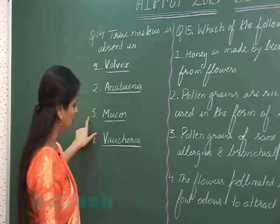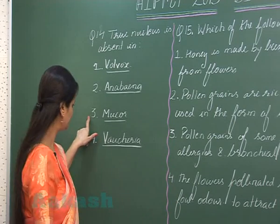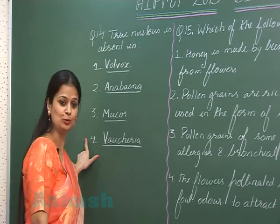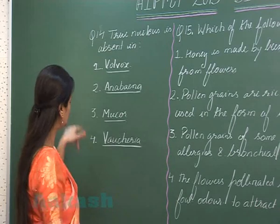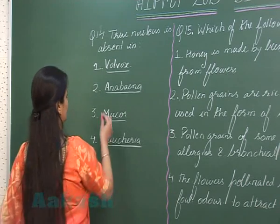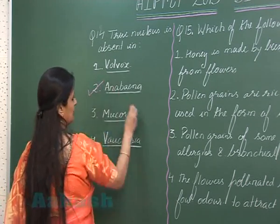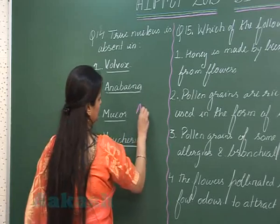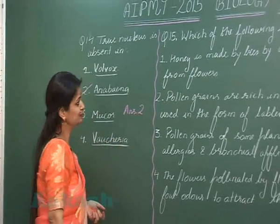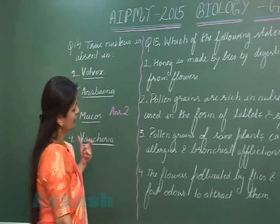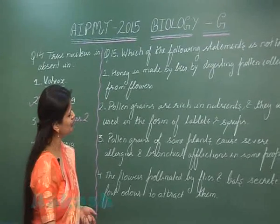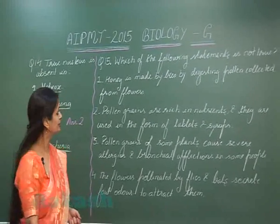Mucor is fungi, Vaucheria is algae — both eukaryotic. So amongst these four, only one is prokaryotic, that is Anabaena. The right answer is option number two. Now for question number 15, we have to look for the statement which is not correct.